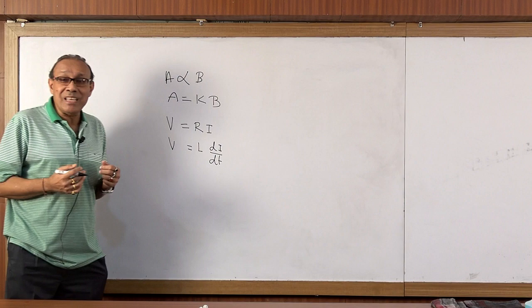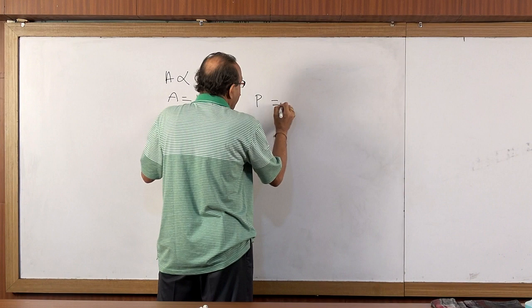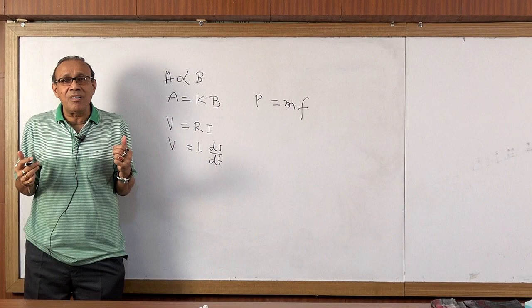Is that all? Surely no. Then came our famous Isaac Newton. He says, put A equal to F, put K equal to M, and put B equal to a. It is Newton's second law.